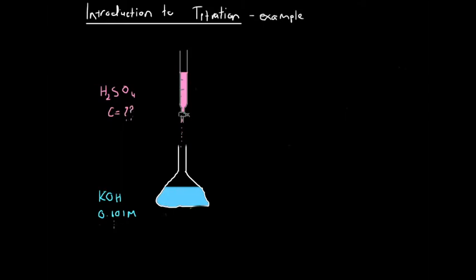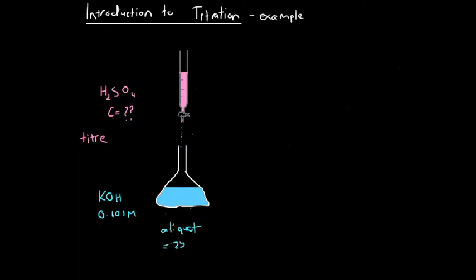Down here in the conical flask we've got potassium hydroxide with a concentration of 0.101 moles per liter. This is called the aliquot, so we've got an aliquot of potassium hydroxide, and our titar is going to contain sulfuric acid. We're told that the volume of our aliquot is 25.0 millilitres and the volume of our titar is 22.5 millilitres.